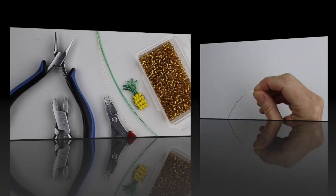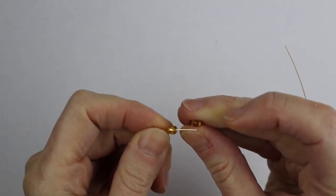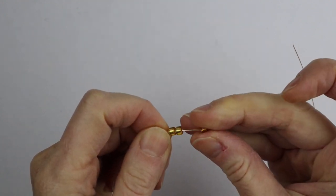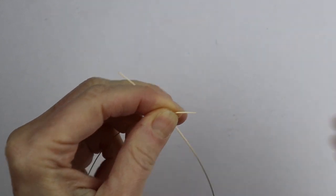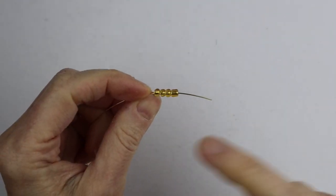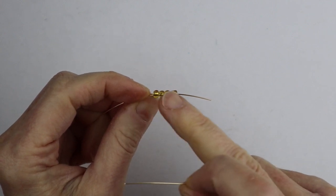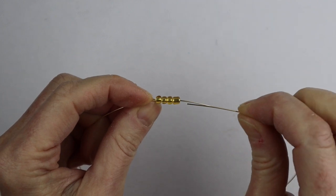We're going to start by putting three seed beads - this is the bottom row on the pineapple. Then for the next row we're going to put on four beads. I'm going to hold the wire with the four beads from the second row and put the other end of the wire back through the beads.